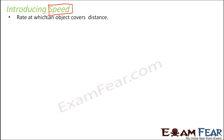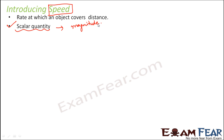Speed is the rate at which an object covers distance — how quickly or how slowly an object is able to cover distance with time. Speed is a scalar quantity, meaning it only needs magnitude for its definition, just a value. For example, the speed of a vehicle is 5 meters per second — we do not need any direction. You will learn more about scalar and vector quantities in higher classes. Speed is calculated as distance covered divided by time taken.